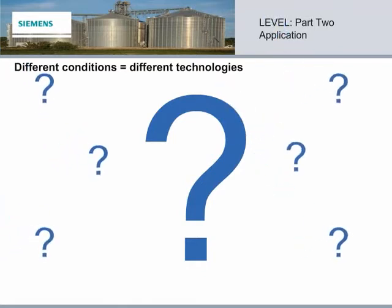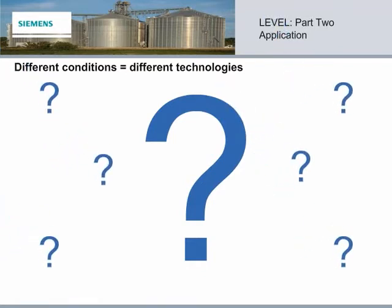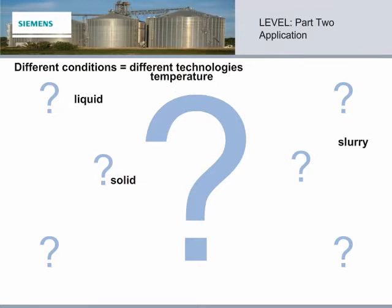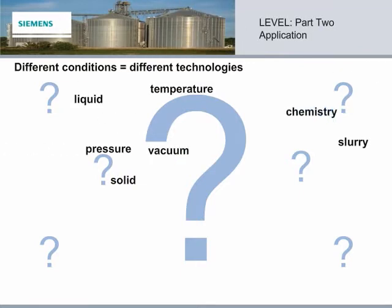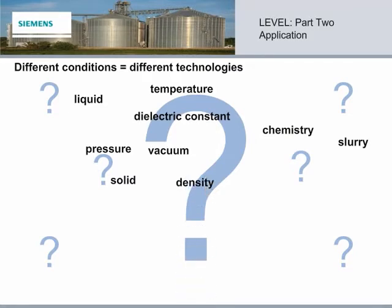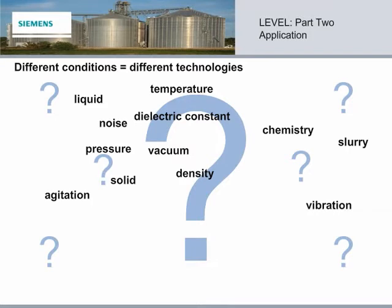These variables determine the selection of the best level device, including the physical state — liquid, solid or slurry — temperature, pressure or vacuum, chemistry, dielectric constant of the medium, density of the medium, agitation, acoustical or electrical noise, vibration, mechanical shock, and tank or bin size and shape.